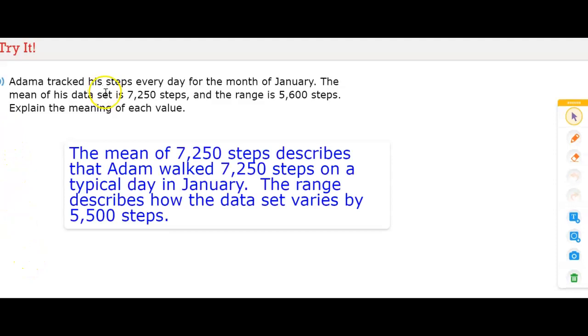For this, I had to type it. That would have been a lot of writing, and the writing for me on here is not the best. I had to explain the meaning of each value. The mean of 7,250 steps describes that Adam walked 7,250 steps on a typical day in January. So, that's what the mean describes. The range describes how the data set varies by 5,500 steps.